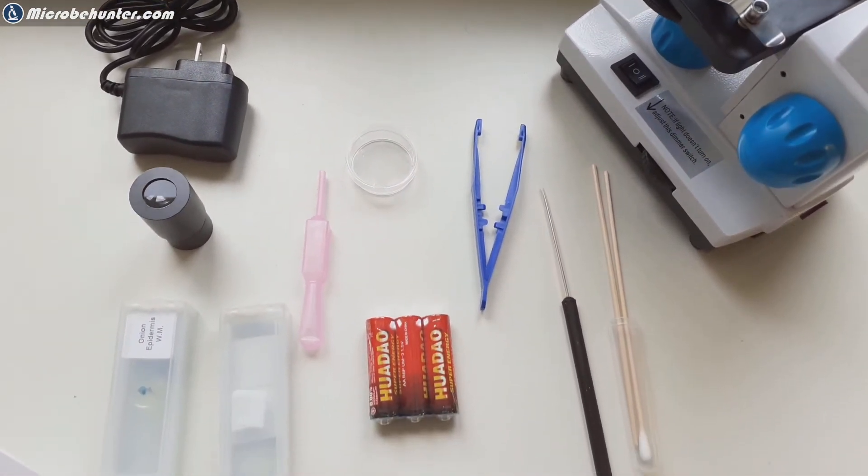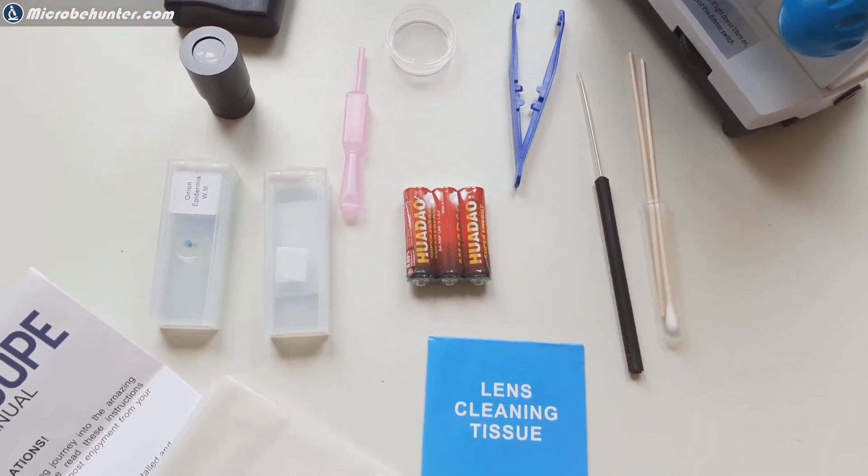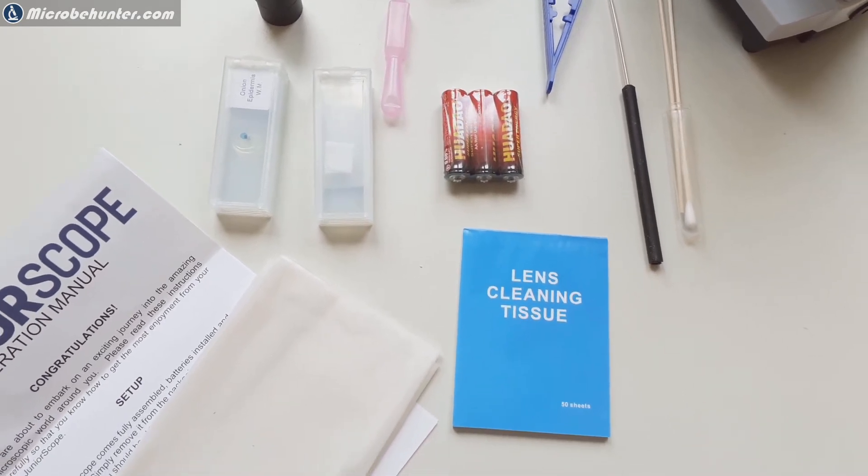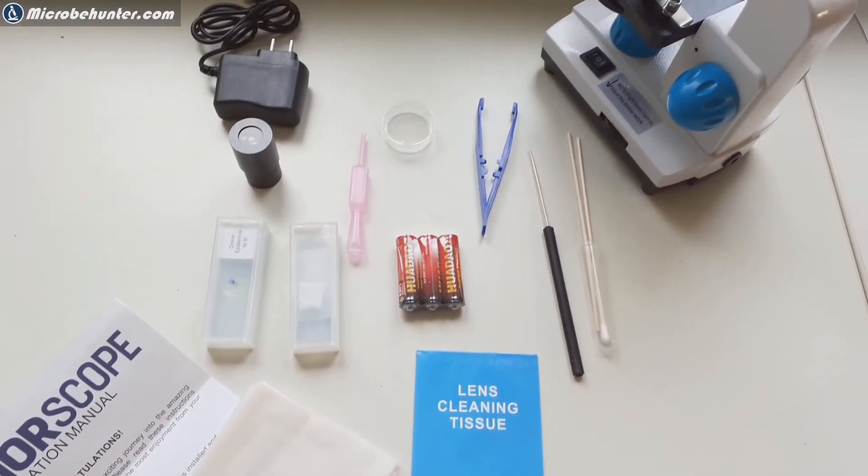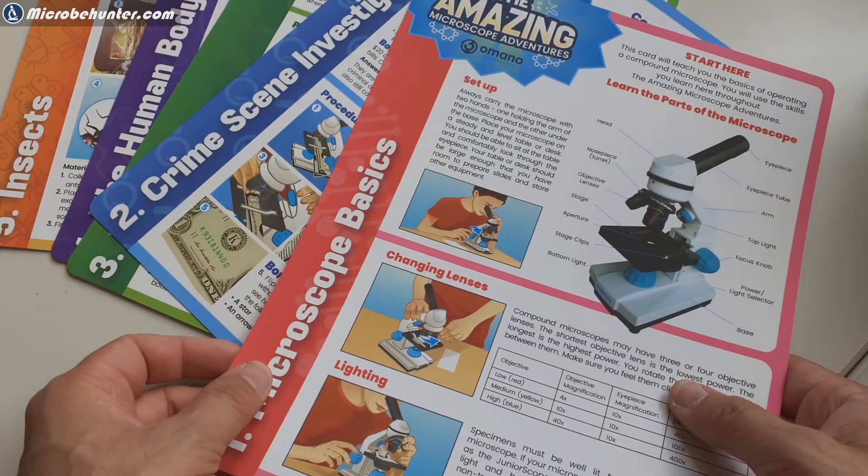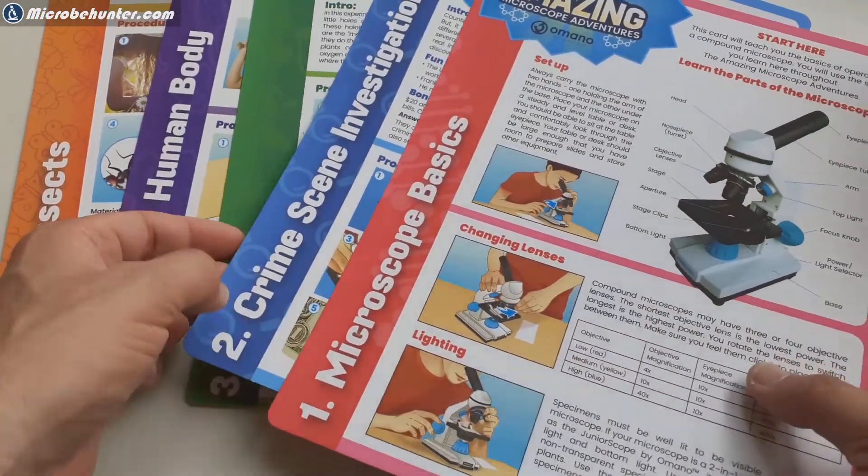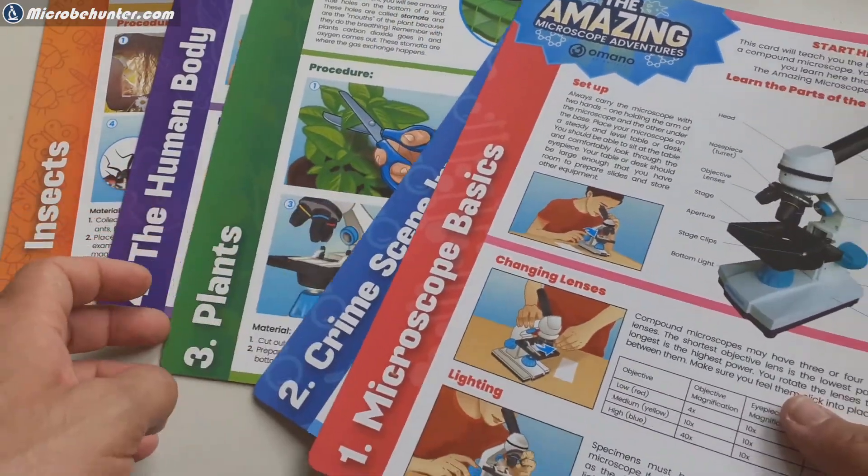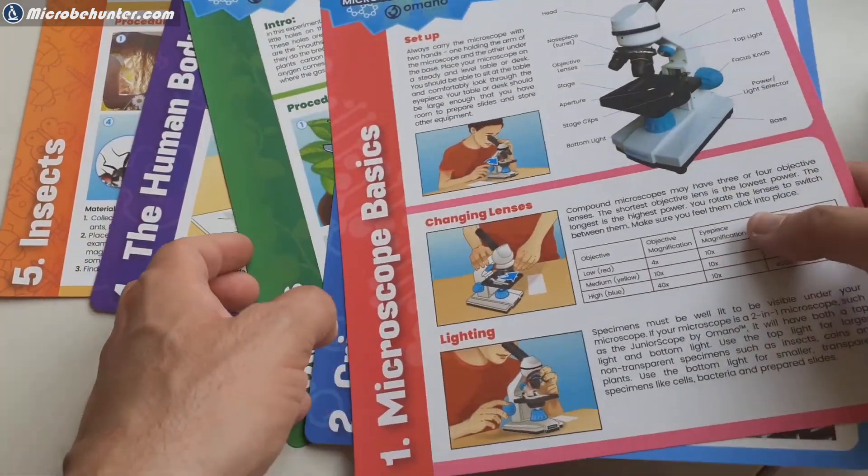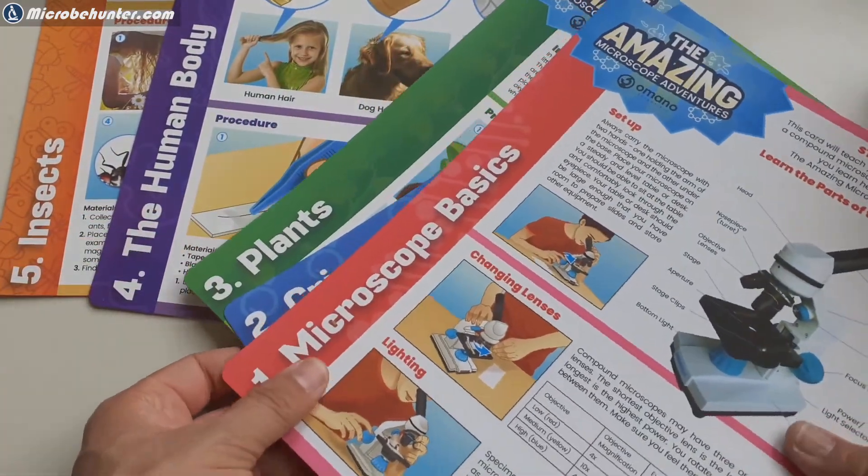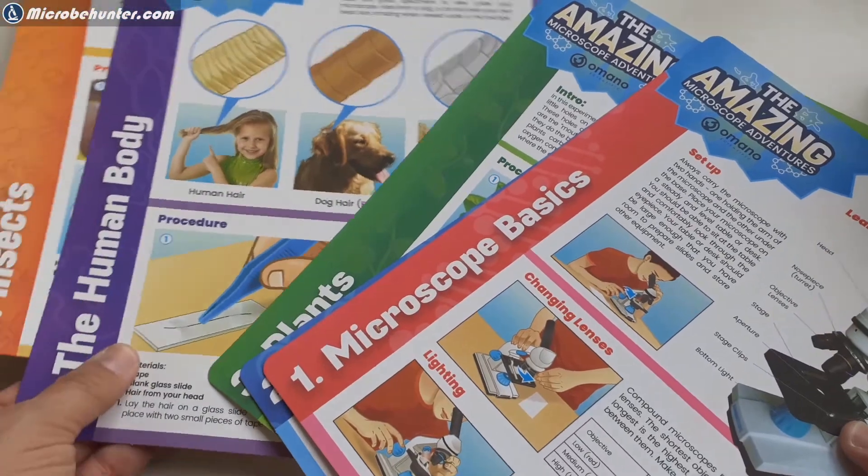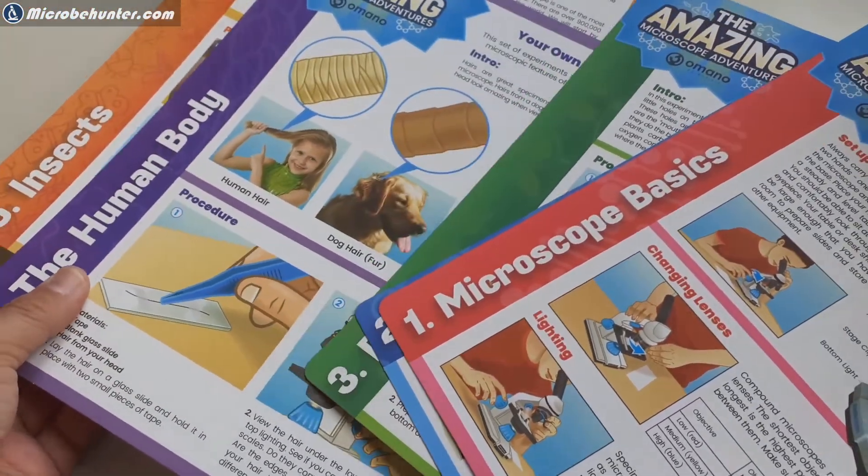So these are all of the parts unpacked and I want to have now a close look at those colorful information cards that came along. So here they are, microscope basics, crime scene investigations, plants, the human body, insects. A variety of different topics, quite nice quality.